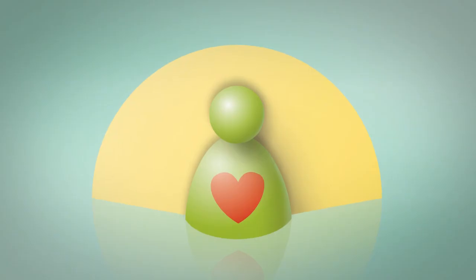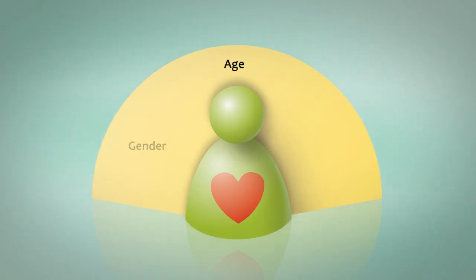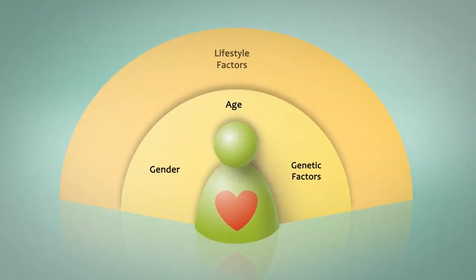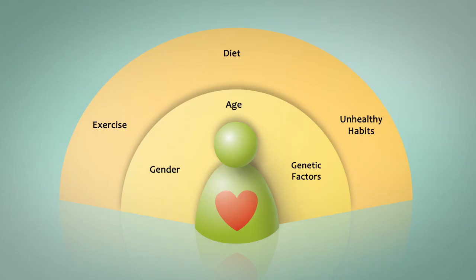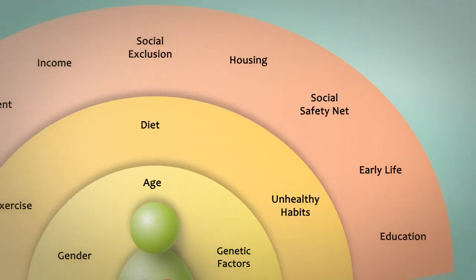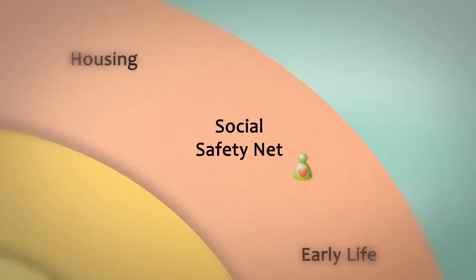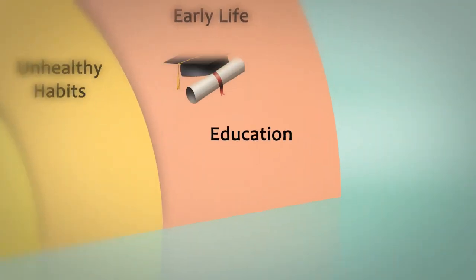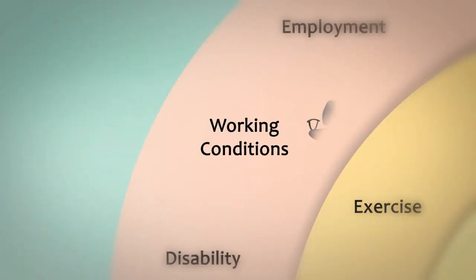We commonly think that our health is affected by our age, gender, and genetic factors that we inherit from our parents. Most people realize that our health is also affected by lifestyle factors, like how much we exercise, what food we eat, and unhealthy habits such as smoking and excessive drinking. However, these factors are only a small part of what affects our health. Other factors include our social relationships with friends and within our community, our income, our education, and our working conditions.